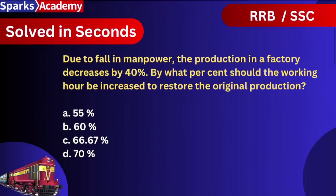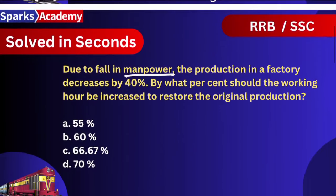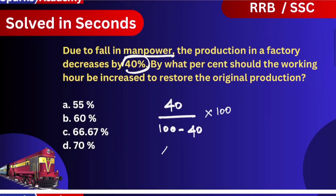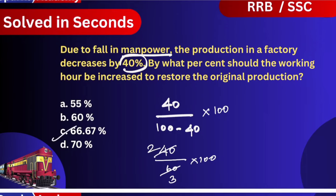Next question. So manpower falls 40%. What do you do? 40 divided by (100 minus 40), into 100. That is 40 divided by 60 into 100, which is nothing but 2 by 3. So 2 by 3 is nothing but 66.67%.